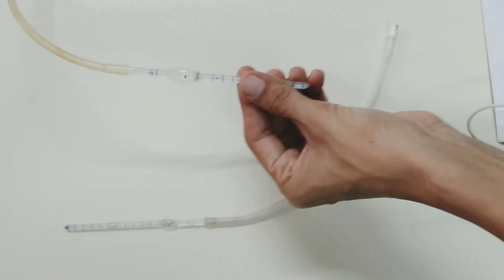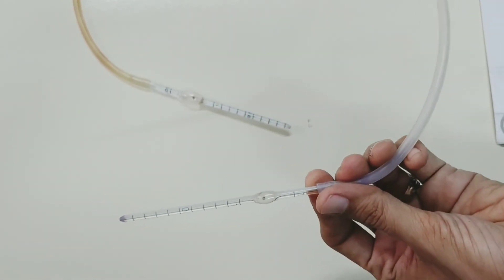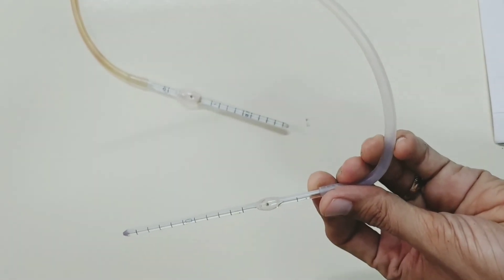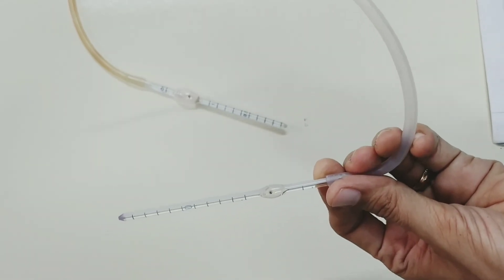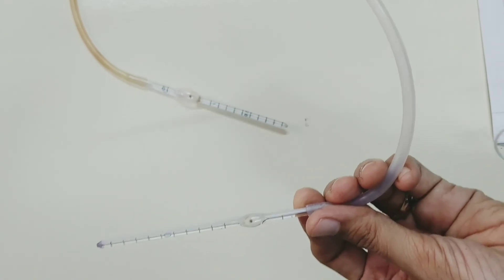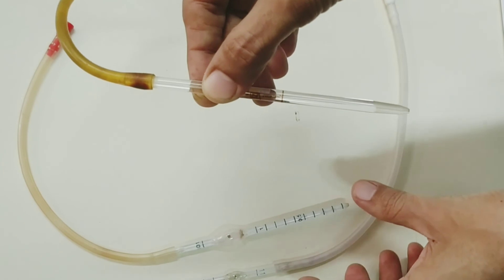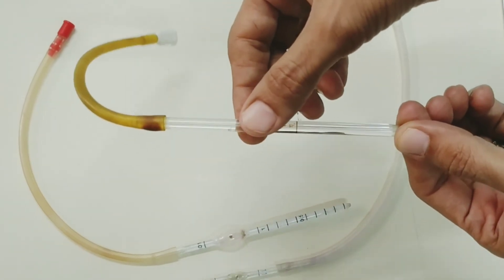WBC pipette is used for counting RBC in case of severe anemia. It is also used for platelet count, sperm count, and bacteria. Third variety of pipette that is not in the hemocytometer but we are using it, is the hemoglobin pipette.